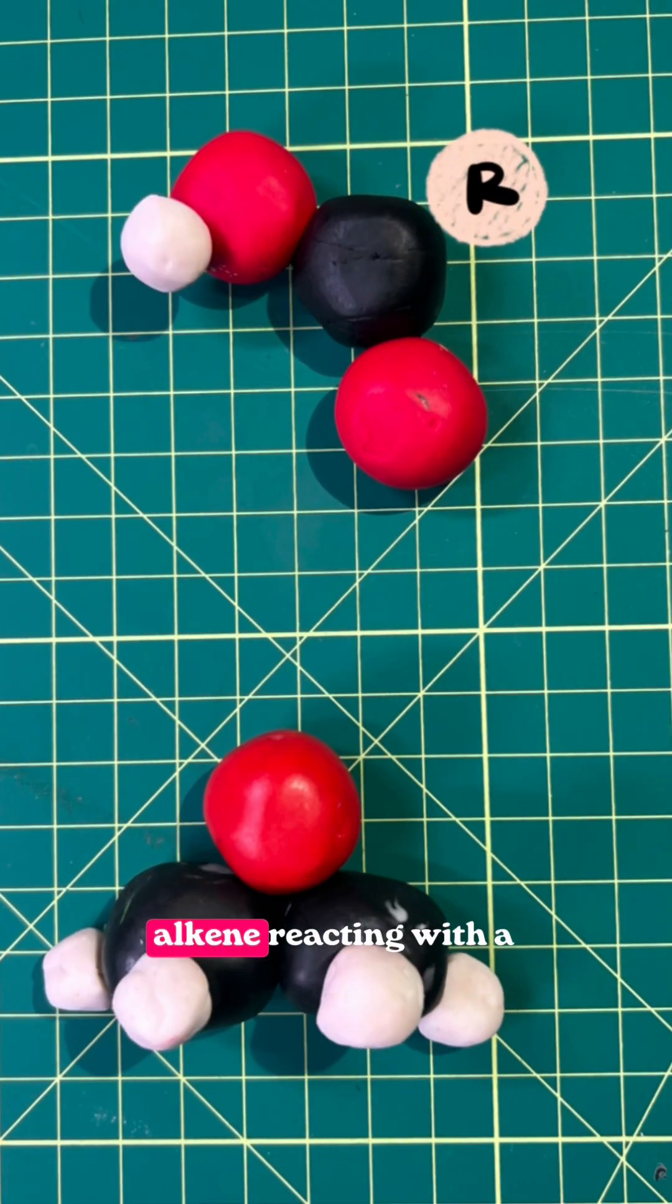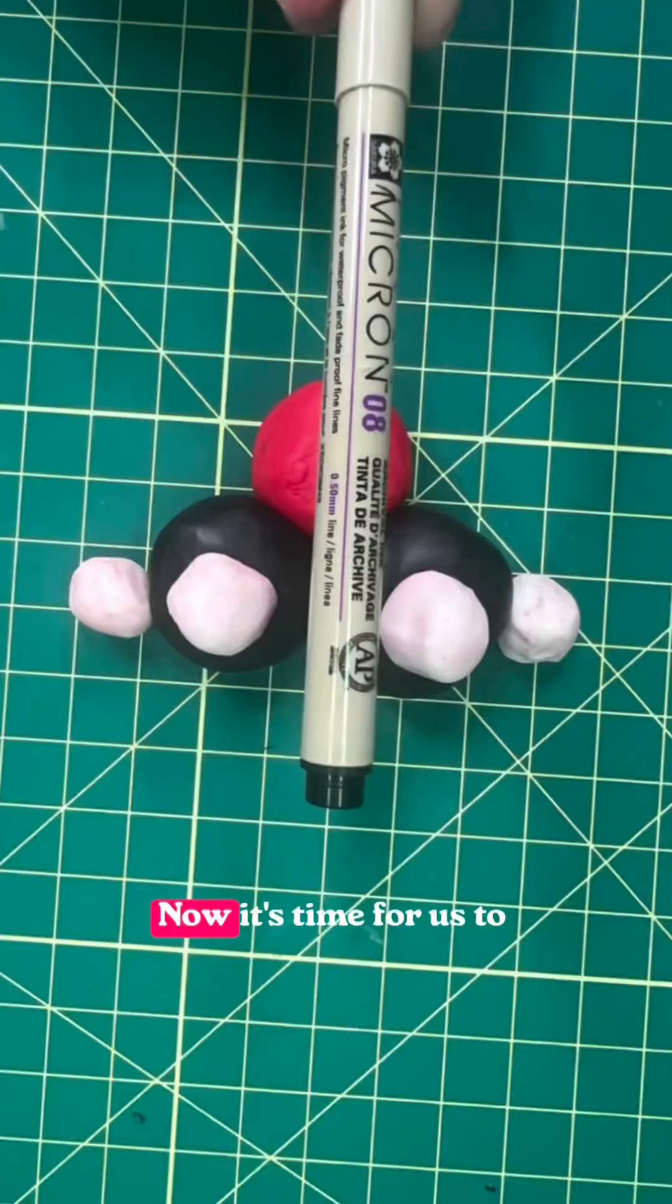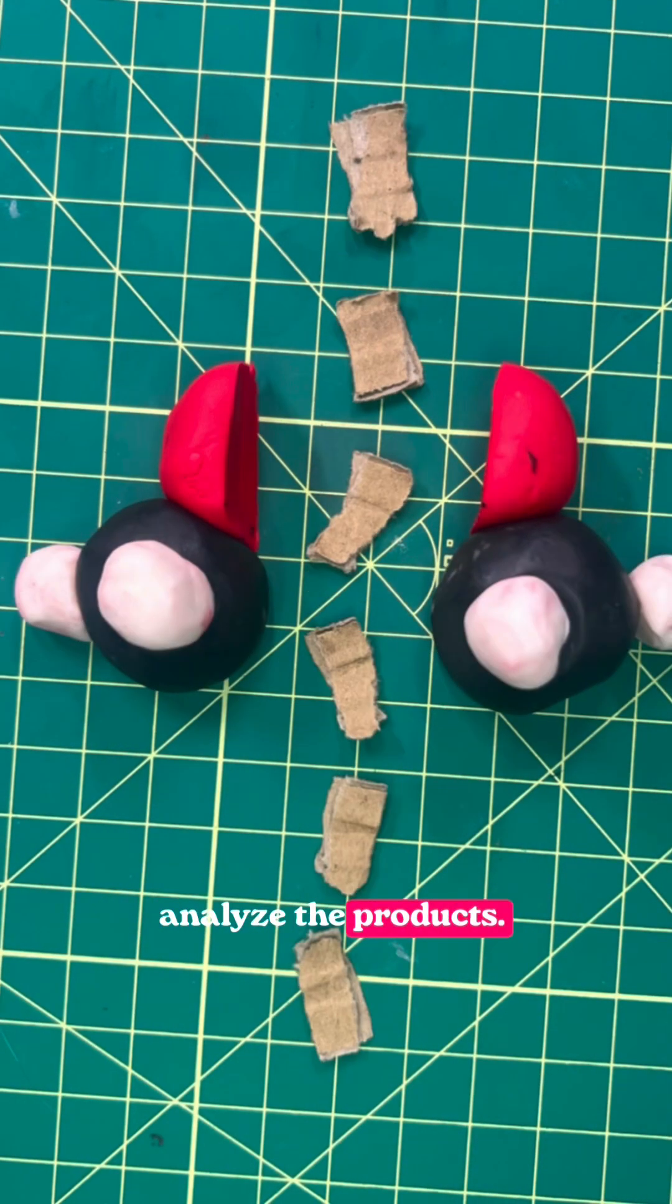We've introduced that an alkene reacting with a peroxy acid will result in an epoxide. Now it's time for us to analyze the products.